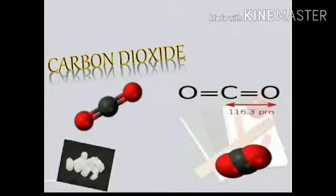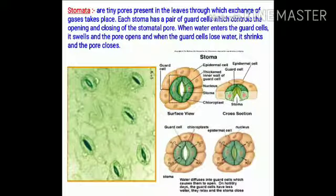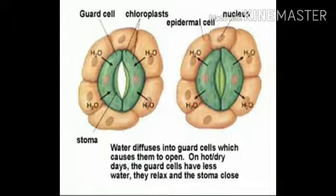Carbon dioxide. A source of carbon is essential for the synthesis of sugars. Carbon dioxide present in the atmosphere is the main source of carbon which plants use in photosynthesis. Carbon dioxide is trapped through stomata present in the leaves. Stomata are tiny pores present in the leaves through which exchange of gases takes place. Each stoma has a pair of guard cells which control the opening and closing of stomatal pore. When water enters the guard cells, it swells and the pore opens. And when the guard cells lose water, it shrinks and pore closes.